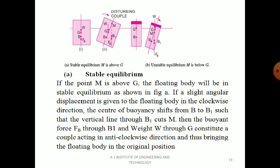For stable equilibrium of a floating body, M should be above G. For unstable equilibrium, M is below G. For a submerged body, B should be above G for stable equilibrium and G above B for unstable equilibrium. For a floating body, the metacenter M should be above G for stable equilibrium. If point M is above G, a slight angular displacement produces a couple in the anti-clockwise direction, bringing the floating body back to its original position.